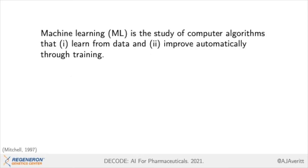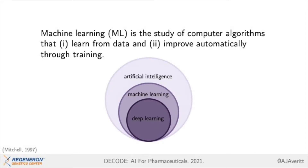I'm sure that everybody listening is well aware that machine learning, or ML, is the study of computer algorithms that learn from data and improve automatically through training. Throughout this talk, I will be discussing machine learning and artificial intelligence, or AI, assuming that machine learning is a subset of AI and deep learning is a subset of machine learning. You may see the notation MLAI within the talk, and that will refer to classes of methods that fit into this diagram.